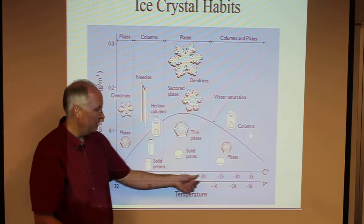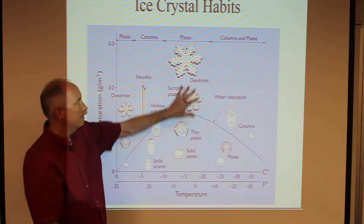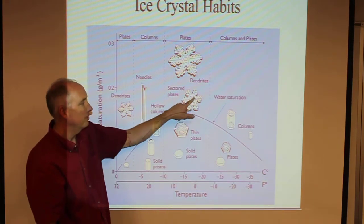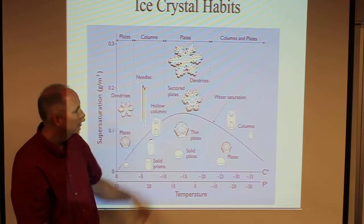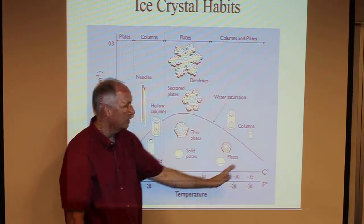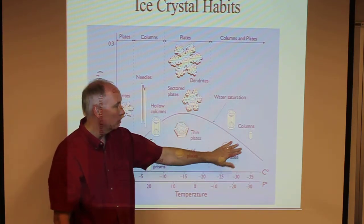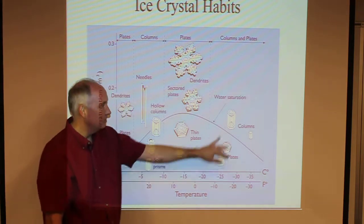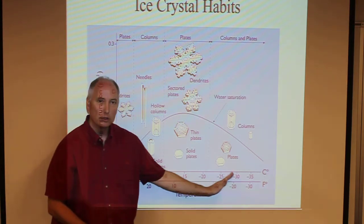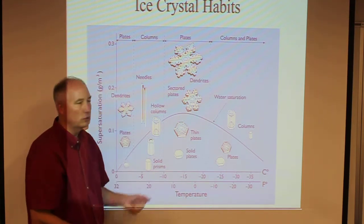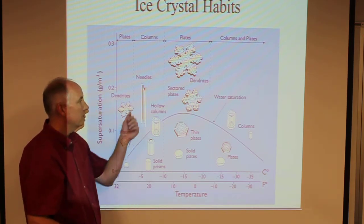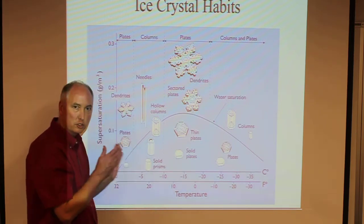Between -10 and -22°C, the most common crystal is a dendrite or sectored plates—basically hexagonal plates with hexagonal plates on the corners. At temperatures colder than -22°C, we generally end up with hexagonal columns, sometimes hollow and sometimes not. If you look at an individual ice crystal, you can generally tell exactly what temperature it formed at, because each ice crystal habit forms in a different temperature regime.